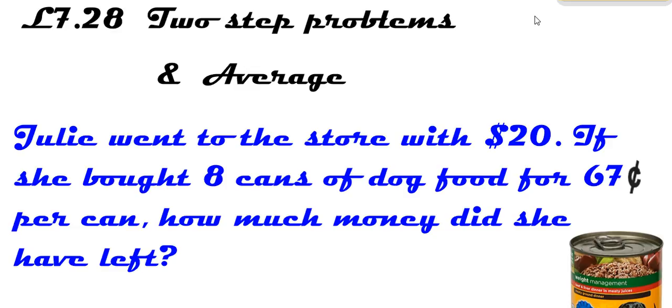Of course, two-step is talking about having two steps. So let's work with this. It says Julie went to the store with $20, and she bought eight cans of dog food for $0.67 per can. How much money did she have left?